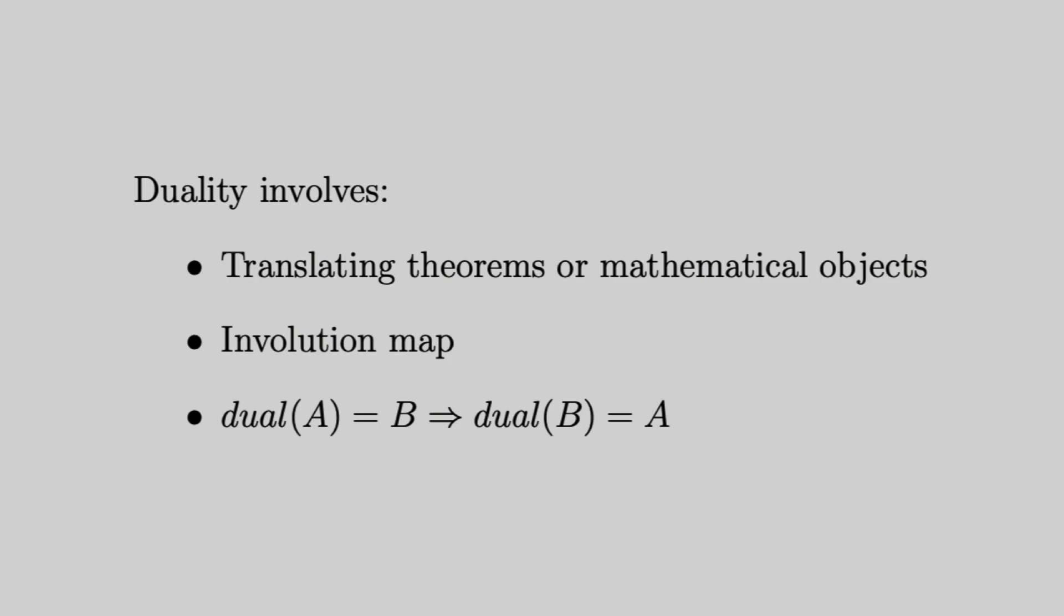So before continuing, we should probably take some time to look at duality a bit more. Now generally we can think of a dual as what you get when you apply some sort of translation or map to some mathematical object. This map is supposed to preserve the most important relations or properties. And often this map is an involution, meaning if you apply it twice you get back the original object.